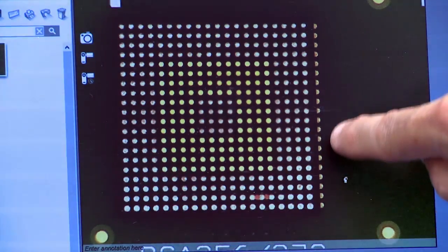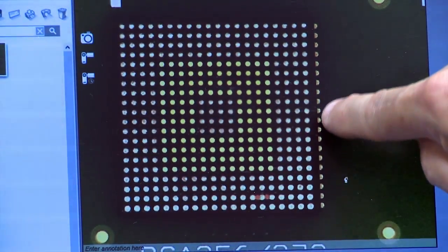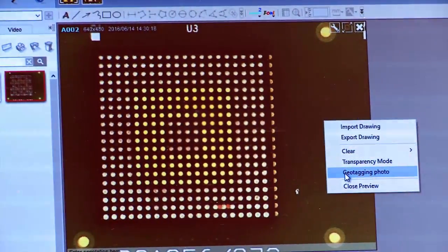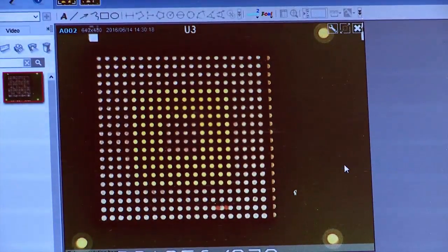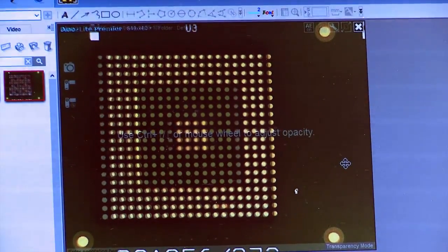On the computer screen, the edge of the substrate on the component is visible. Select the software's transparency mode to view the bottom side of the component and the ball grid array of the board. The image of the component is laid over the array pattern on the board.